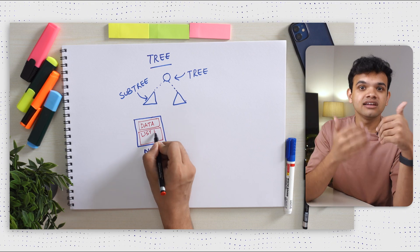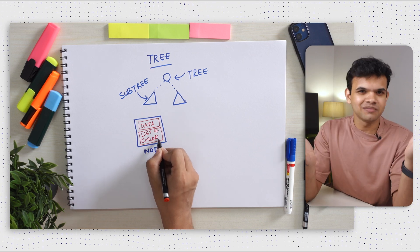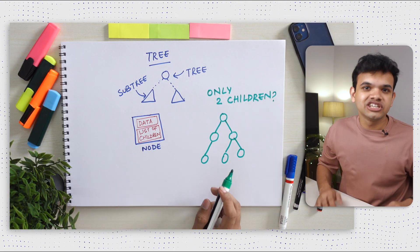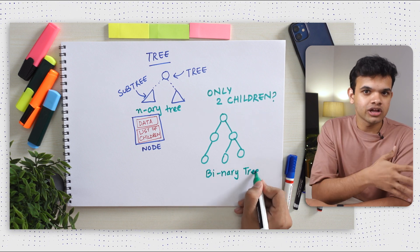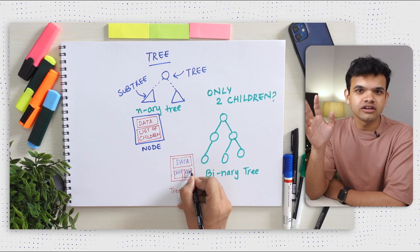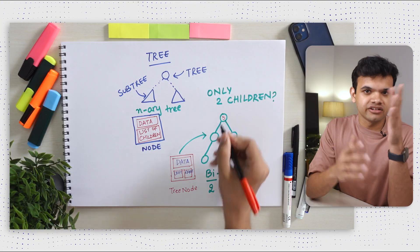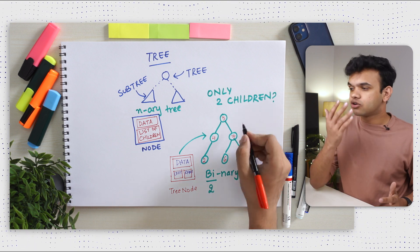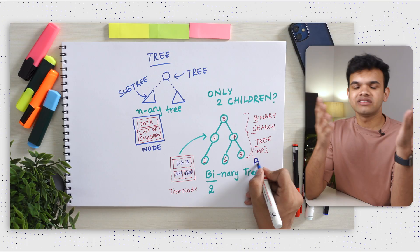In memory, every node has data and a list of its child nodes. Whenever we create a child node, we add the address of that child node in the list of children for the parent node. Now let's add a restriction — what if we only allow two child nodes, one left child and one right child? Congratulations, you have a binary tree. That means what we were talking about before was an N-ary tree. If you're doing LeetCode-style interview questions, binary trees are a lot more important than N-ary trees. Let's add another restriction — what if the left child must be smaller than the root and the right child must be bigger? Congratulations, you have a Binary Search Tree, or BST.